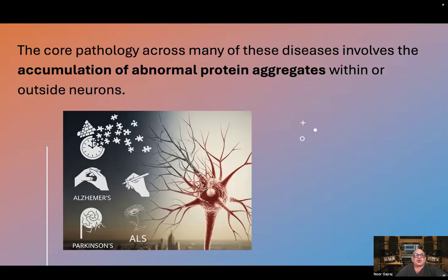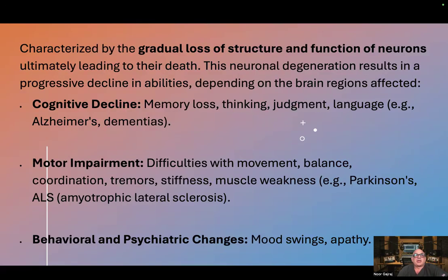The core pathology across many of these diseases involves the accumulation of abnormal protein aggregates within or outside neurons. They are characterized by the gradual loss of structure and function of neurons, ultimately leading to their death. This neuronal degeneration results in a progressive decline in abilities, depending on the brain regions affected.